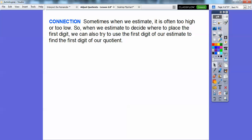When we estimate to decide where to place the first digit, we can also try to use that first digit of our estimate to find the first digit in our quotient. Here's a couple of examples to explain this. We'll do these one at a time. Let's do this one first.